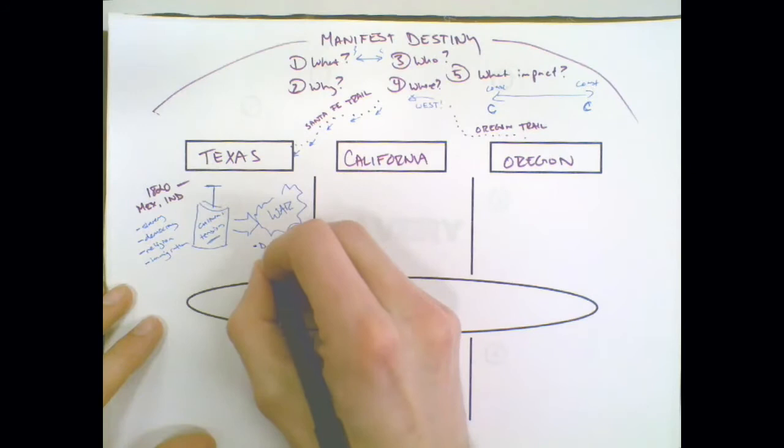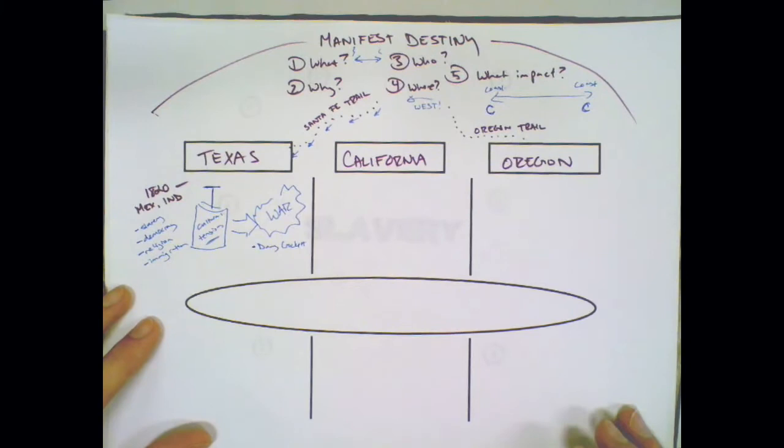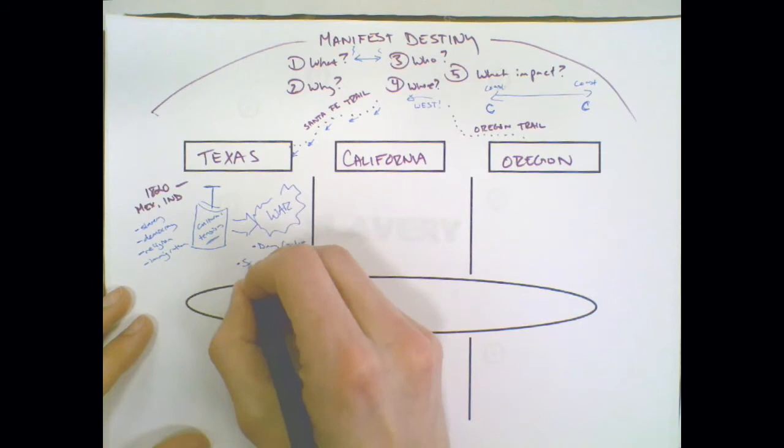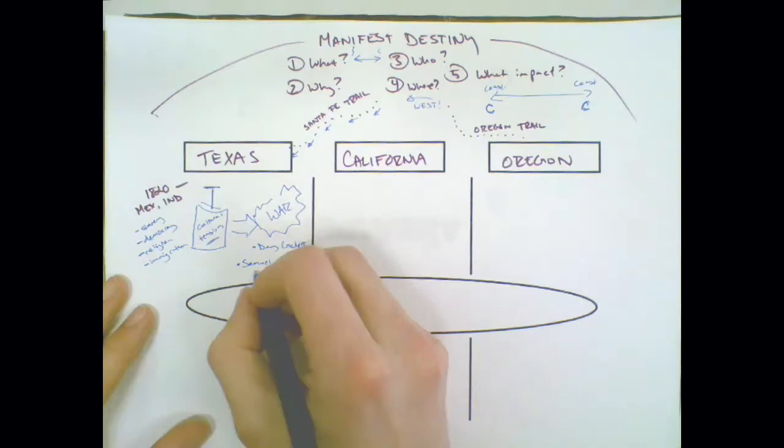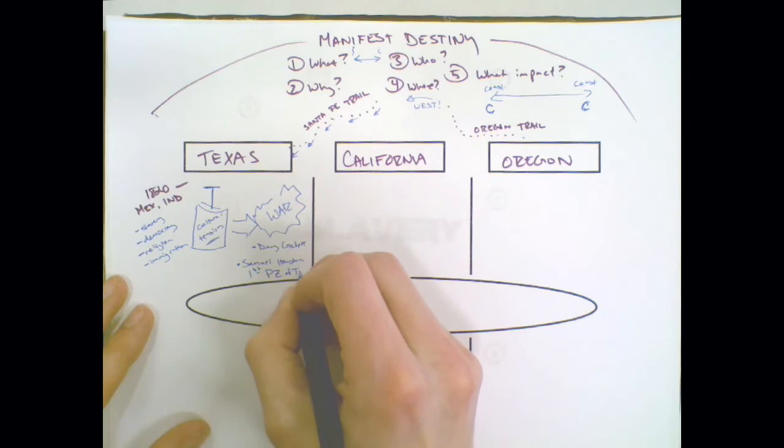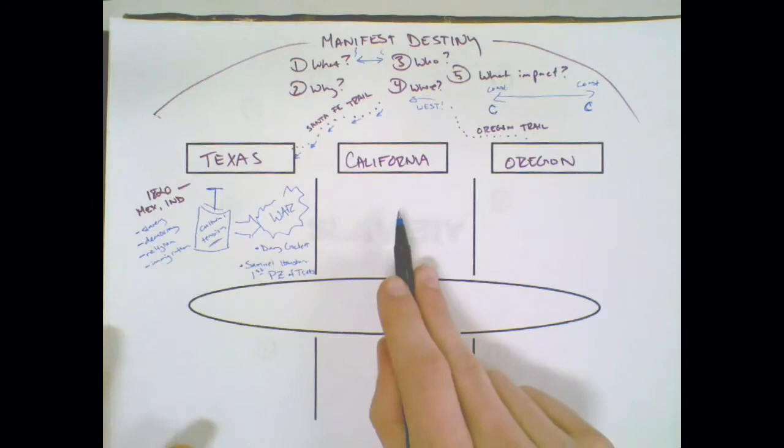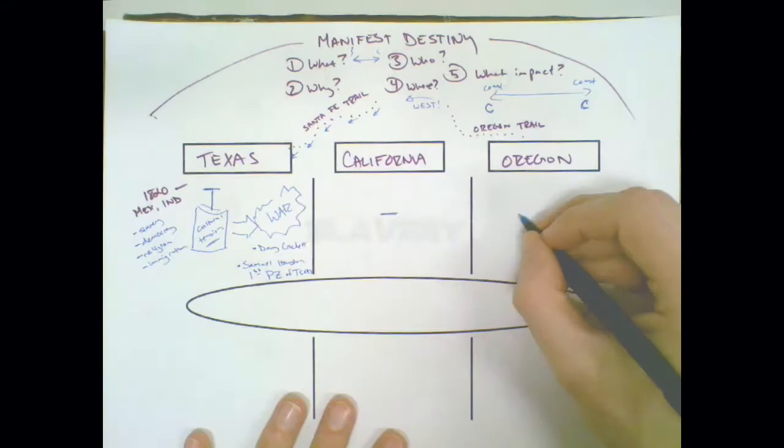All of these ideas create tension between Mexico and these settlers in Texas, and this leads us into war: the war for Texas independence. We meet people like Davy Crockett at the Alamo, and Samuel Houston, who becomes the first president of Texas, the independent Republic.